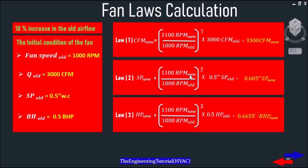Second, Static Pressure new equals (1100 RPM new divided by 1000 RPM old) squared, multiplied by 0.5 Static Pressure old, which gives us 0.605 inches Static Pressure new. Third, Horsepower new equals (1100 RPM new divided by 1000 RPM old) cubed, multiplied by 0.5 Horsepower old, which gives us a brake horsepower of 0.6655.